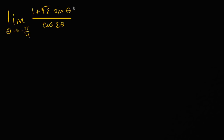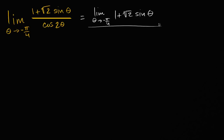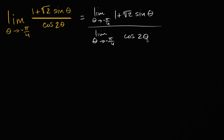One approach is to split this as the limit as theta approaches negative pi over four of one plus the square root of two sine theta, over the limit as theta approaches negative pi over four of cosine of two theta. Both of these expressions represent continuous functions, especially at theta equal to negative pi over four, so we could just substitute in.